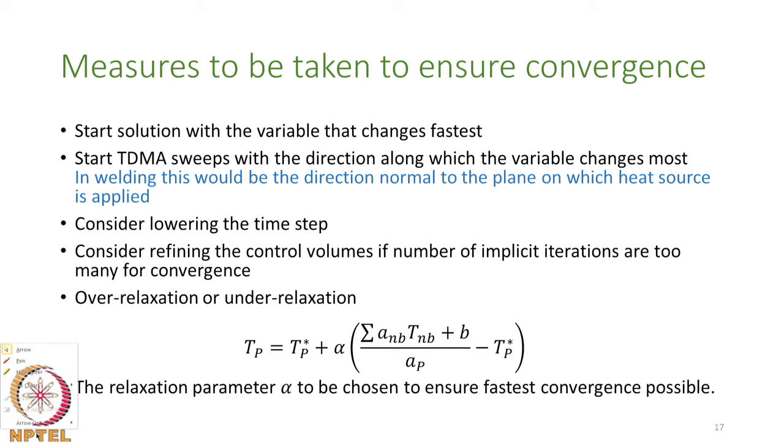If convergence is too slow, consider reducing the time step. Halving the time step doubles the number of steps but, if it reduces iterations by more than 50%, computation time is actually saved. Refining the grid in regions of rapid parameter variation — such as the fusion zone and heat-affected zone — can also speed convergence.